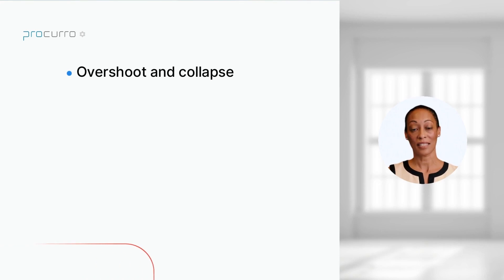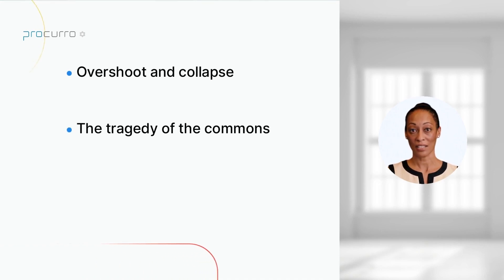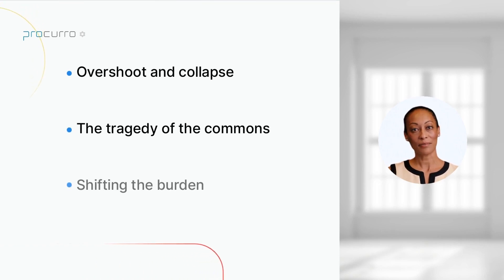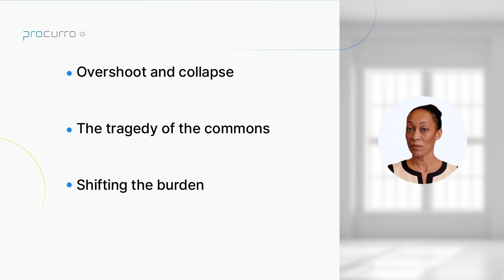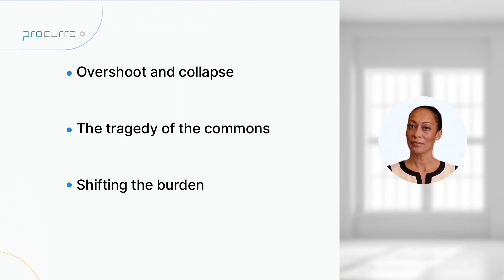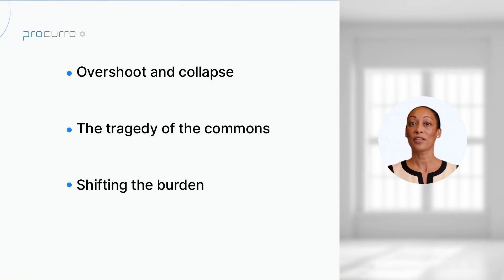Environmental systems have specific archetypes that are commonly found, such as overshoot and collapse, the tragedy of the commons, shifting the burden, and shifting the problem. These archetypes can be used to understand and analyze environmental issues. For instance, the tragedy of the commons describes how the depletion of a common resource can lead to its collapse if not properly managed.